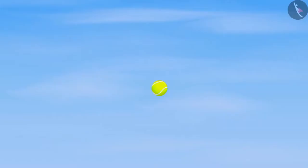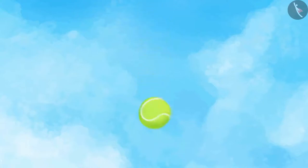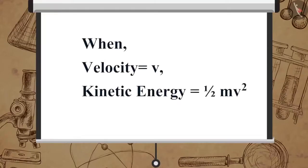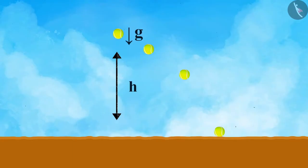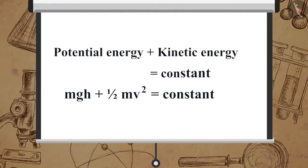As the ball begins to fall, the potential energy is converted into kinetic energy. If the velocity of the ball at a given instant is v, then its kinetic energy is ½mv². As the ball continues to fall, the potential energy keeps on decreasing and the kinetic energy keeps on increasing. The sum of potential energy and kinetic energy always remains constant at all points: PE + KE = constant, i.e., mgh + ½mv² = constant.